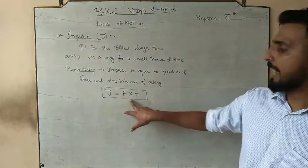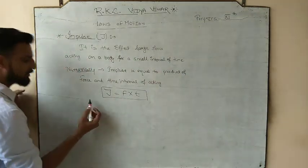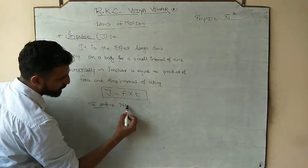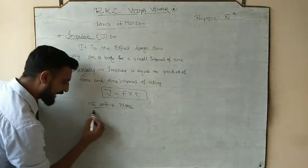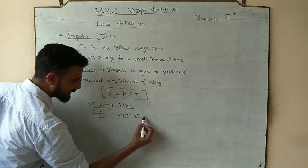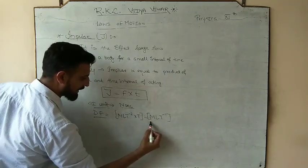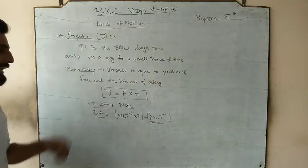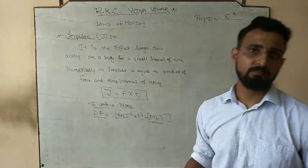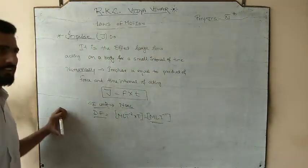Numerically, impulse J is equal to the product of force and the time interval for which it acts: J = F × t. The SI unit is Newton-second, and the dimension formula is MLT⁻², multiplied by T, giving MLT⁻¹. In CGS, the unit is dyne-second. So impulse has SI unit Newton-second and dimension MLT⁻¹.